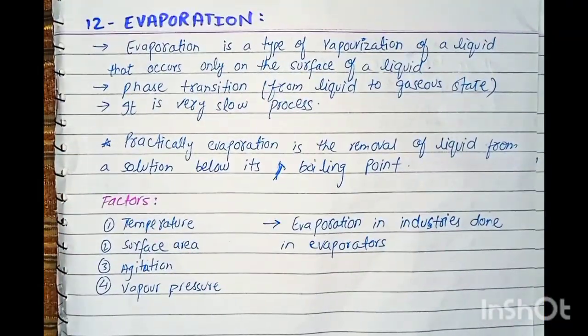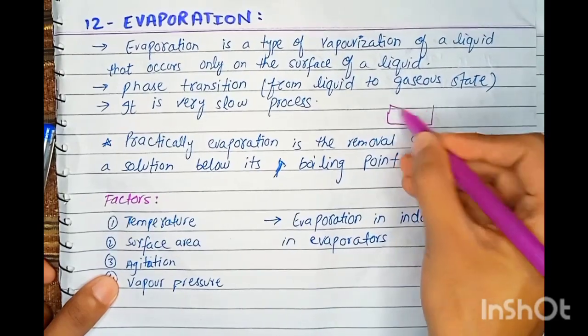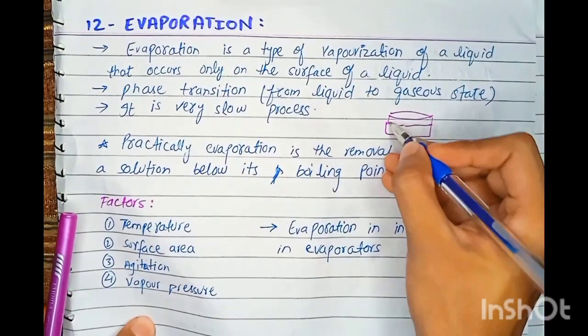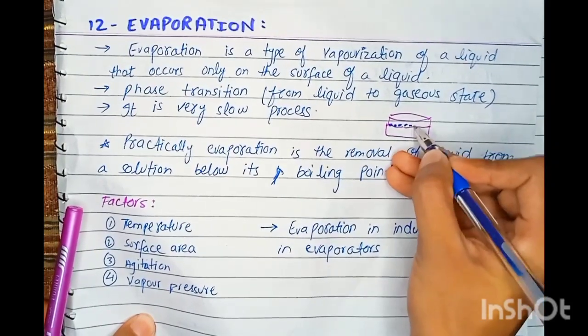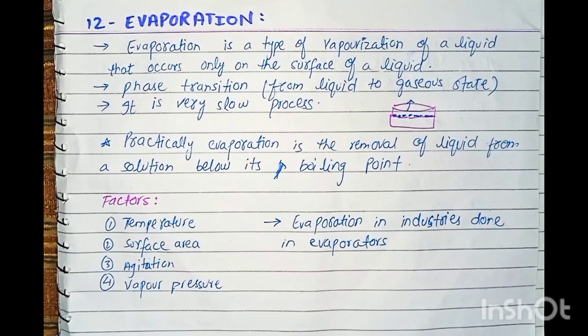Now evaporation. Evaporation is the type of vaporization of a liquid that occurs only on the surface of a liquid. Vaporization occurs on the surface at the surface temperature condition. Example: container with water, water surface particles convert to gaseous state. This is evaporation.